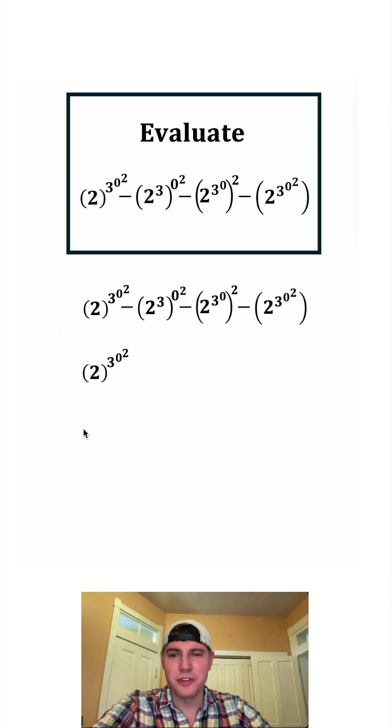Let's focus on this term first. Anytime you have a power tower, you work from the top down. So we're going to focus on the zero squared first. Zero squared is equal to zero. And then we're going to do the three to the zero. And anything to the zero power is one. And now we have two to the one, which is two. So this whole first term simplified to two.